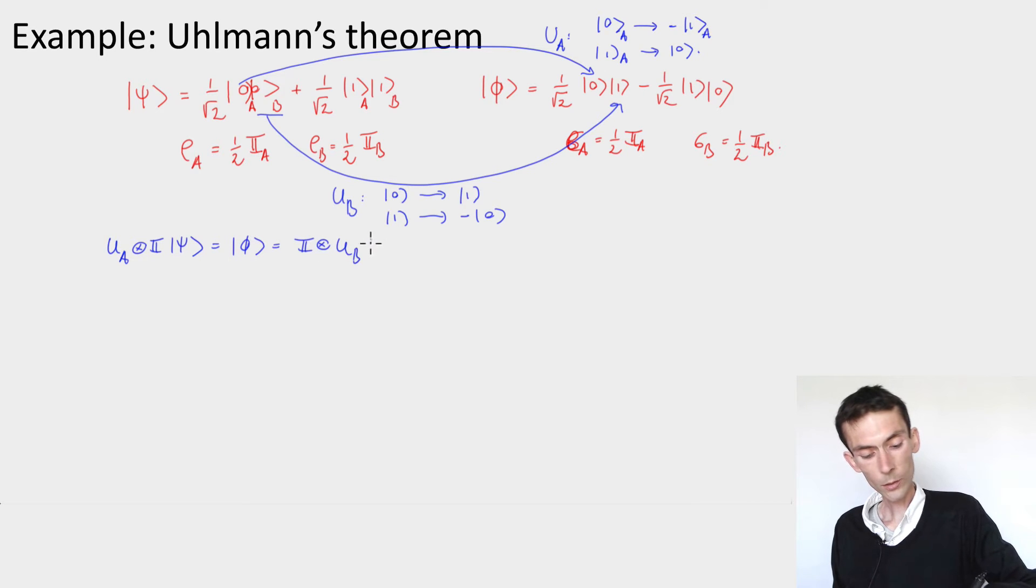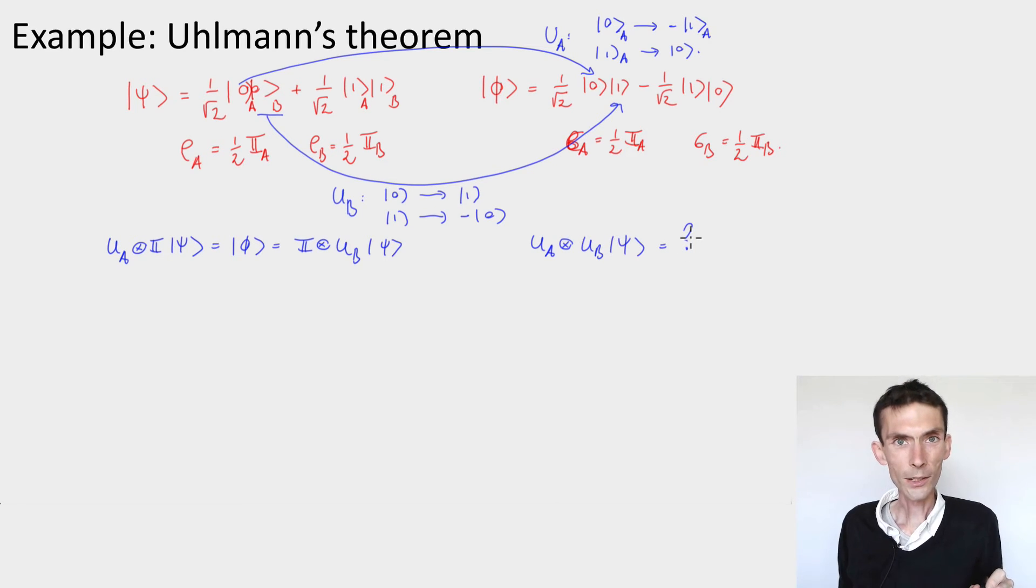That's quite an interesting property. Even more interesting now, you can check that if you actually apply UA tensored UB, both maps at the same time, what happens to the state? I'll let you check this as an exercise.